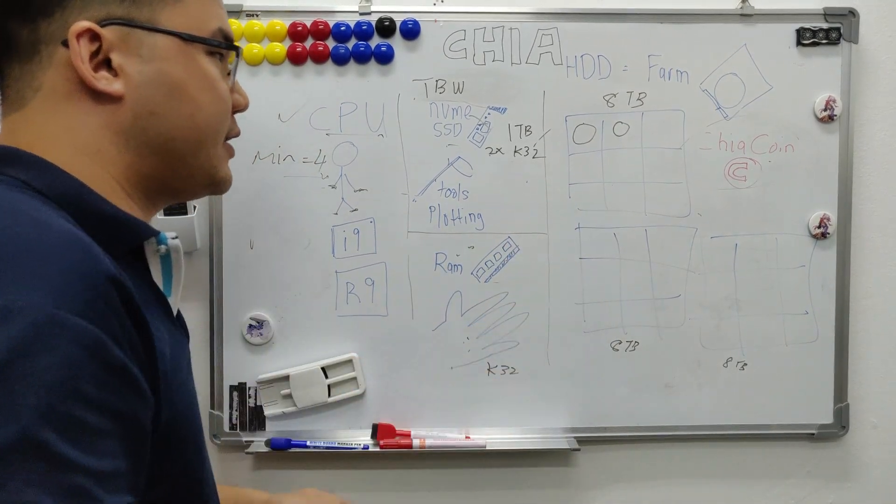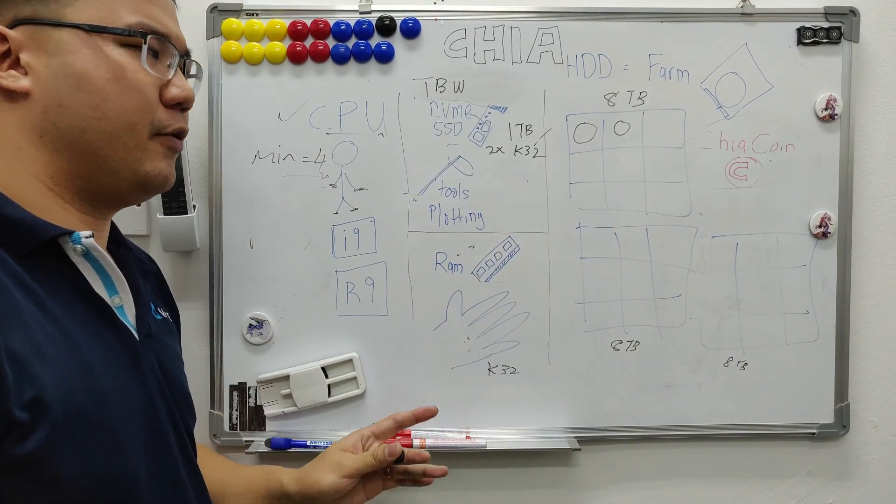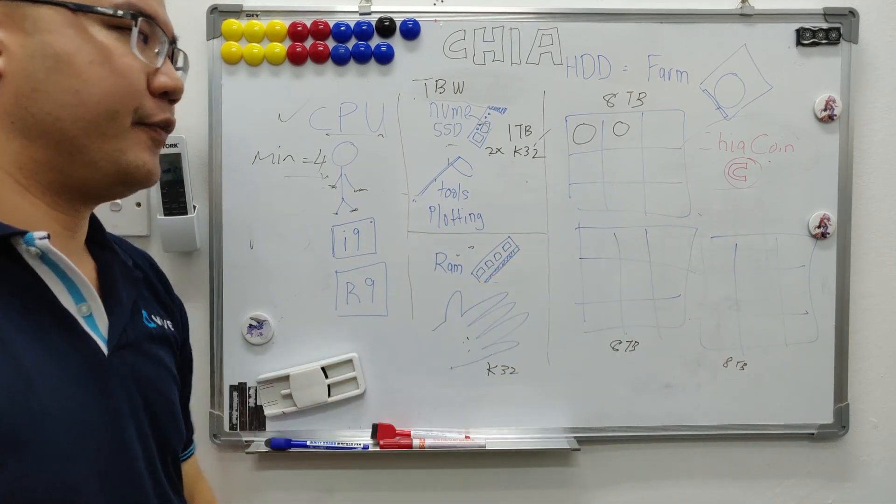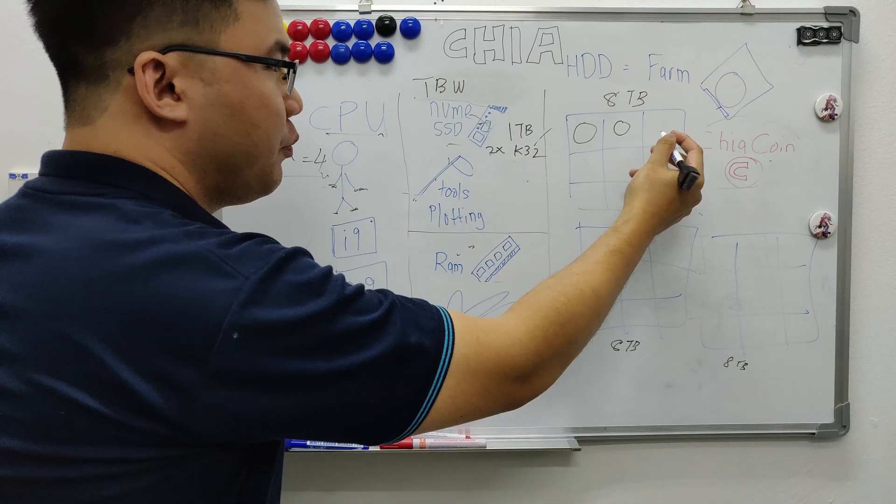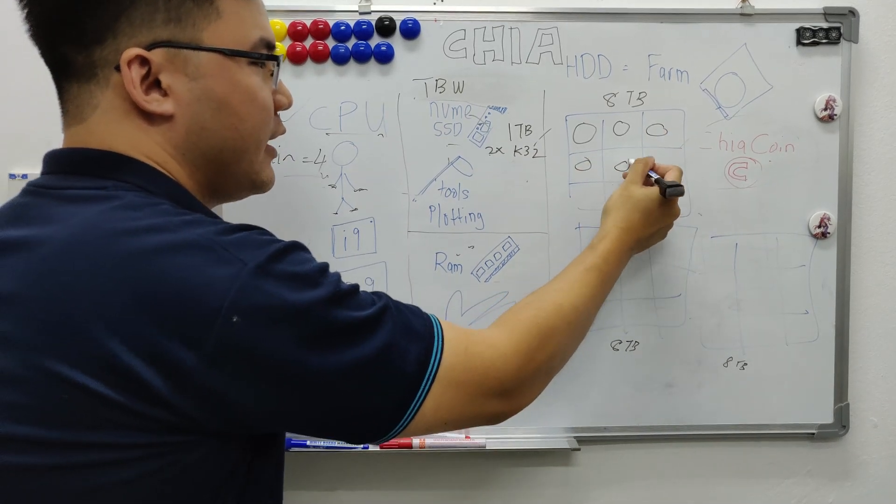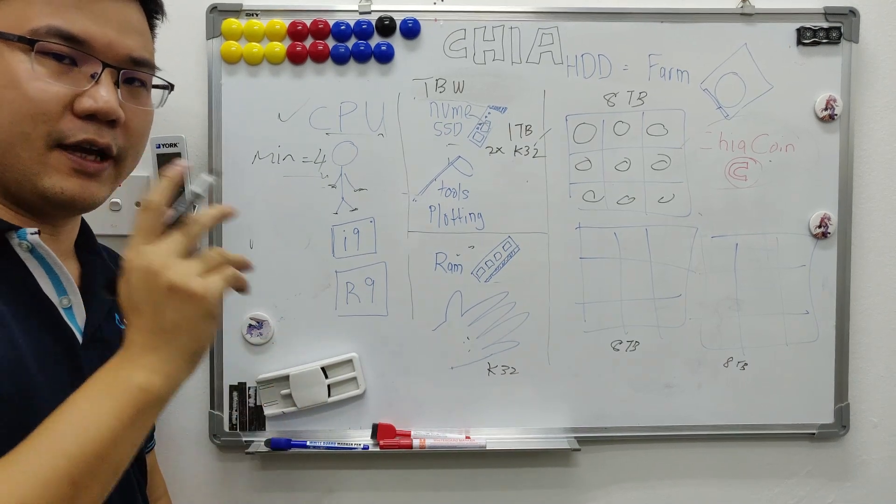But let's say you bought a lot of 8 TB. But all these 8 TB are still unprepared. It's unprepared. You can't get it. So as fast as possible, you need to plot your 8 TB. Let's fill it up, fill it up, fill it up. This will increase your chance of getting the Chia coin.